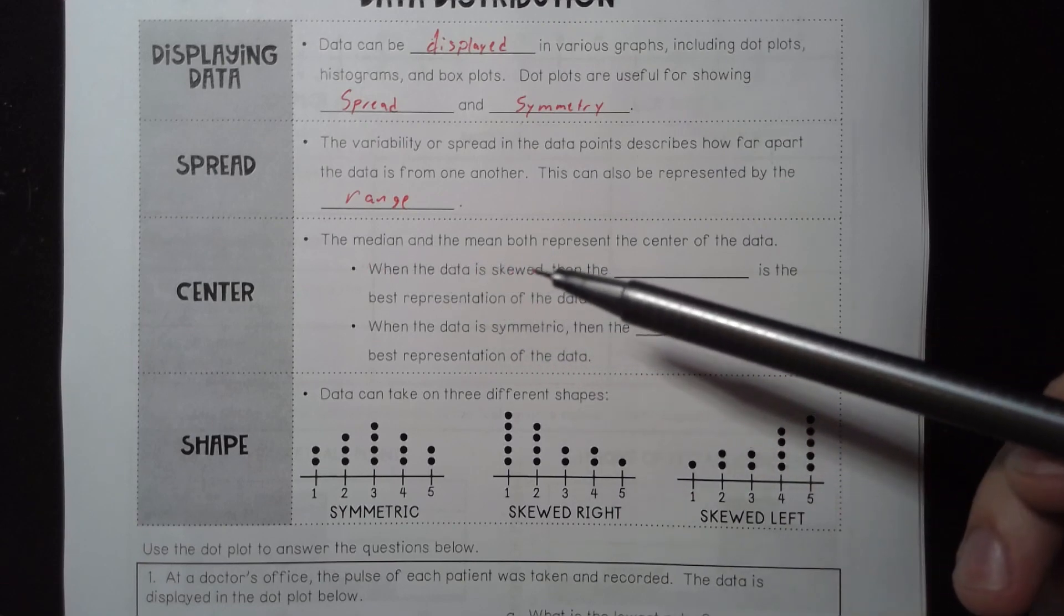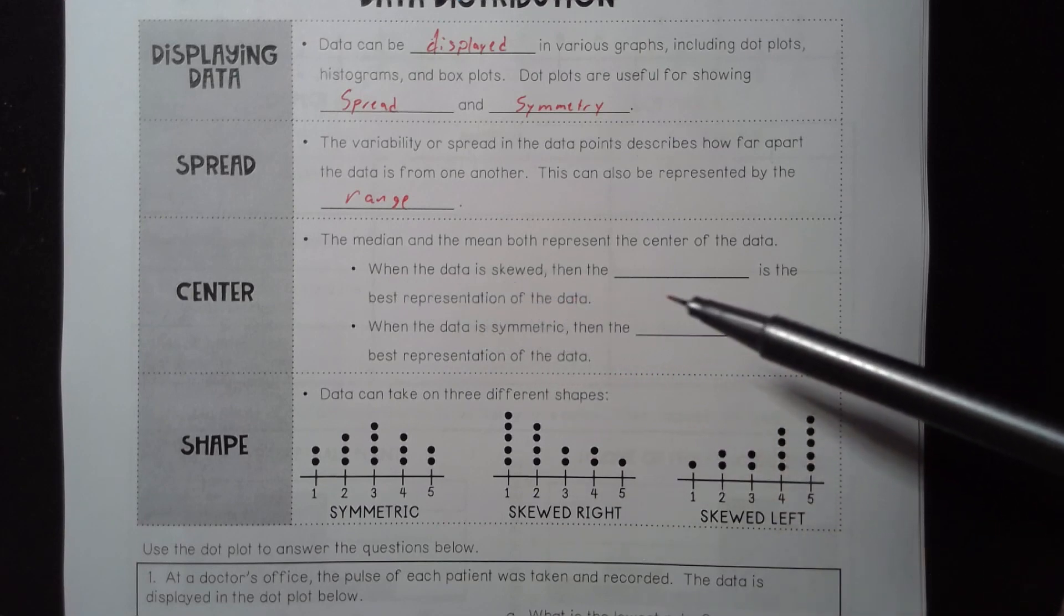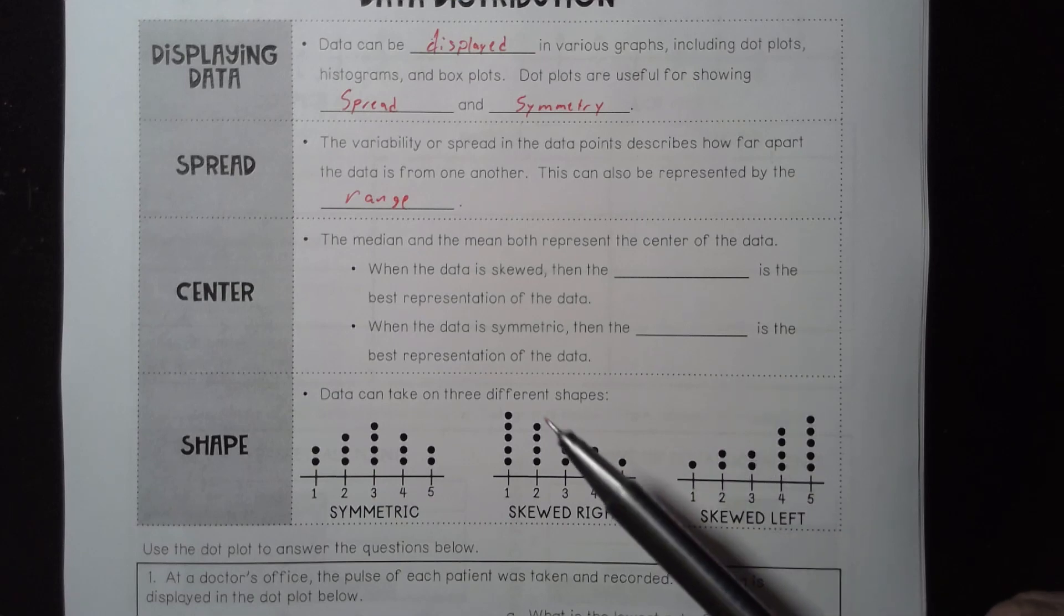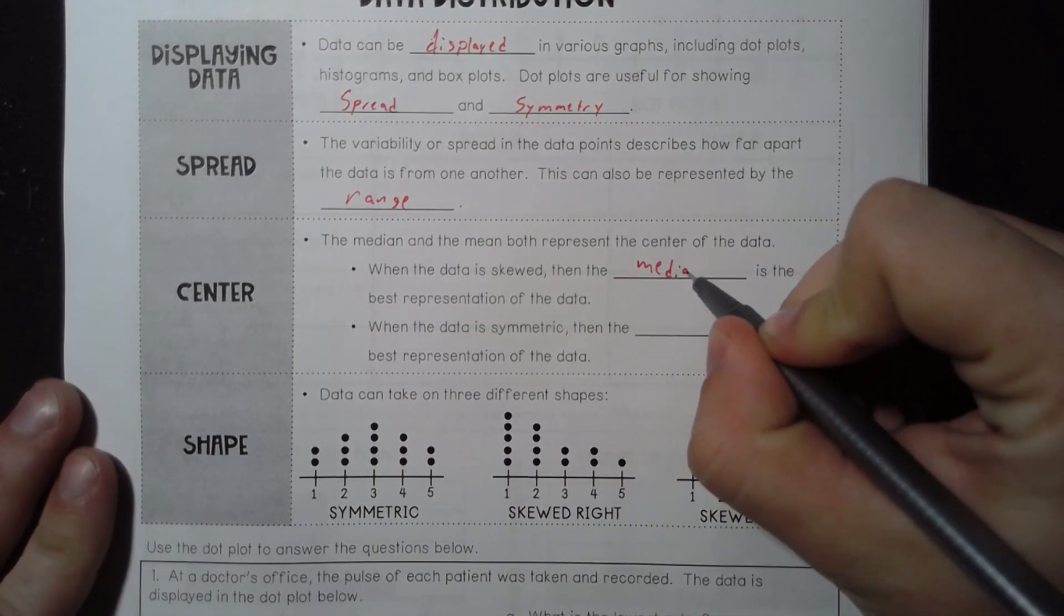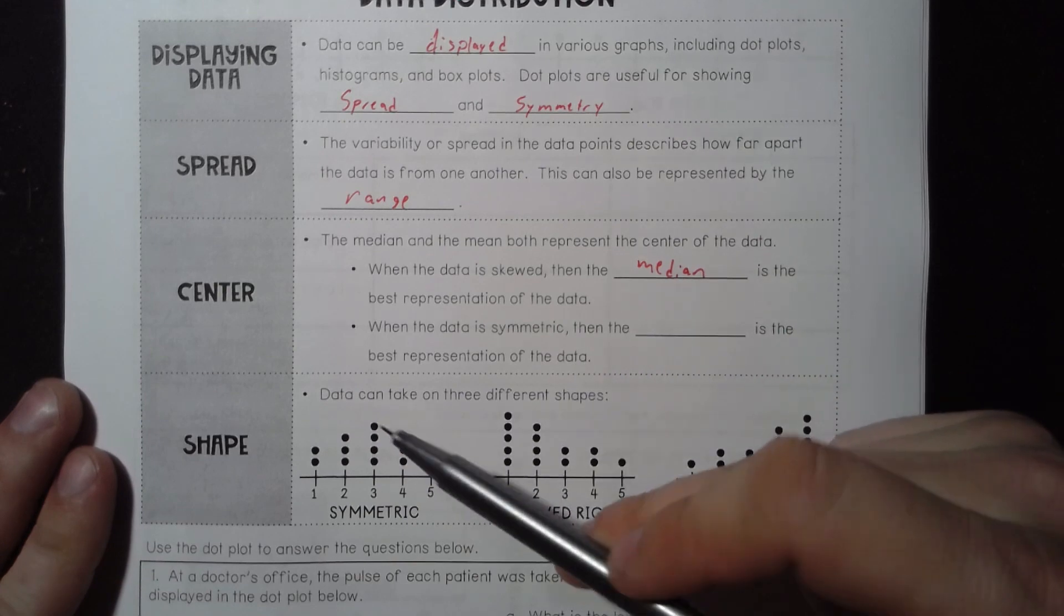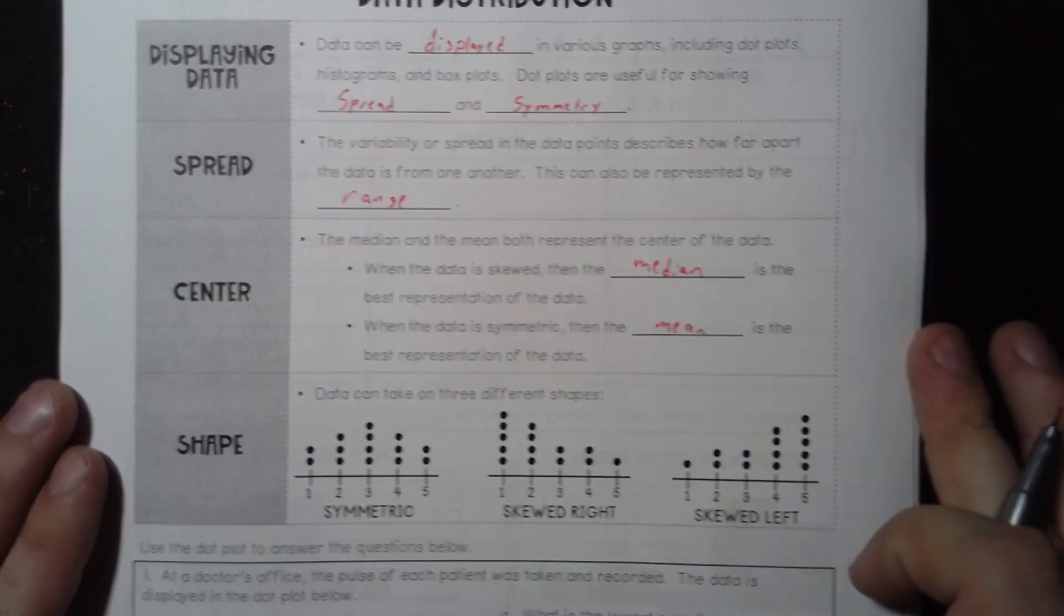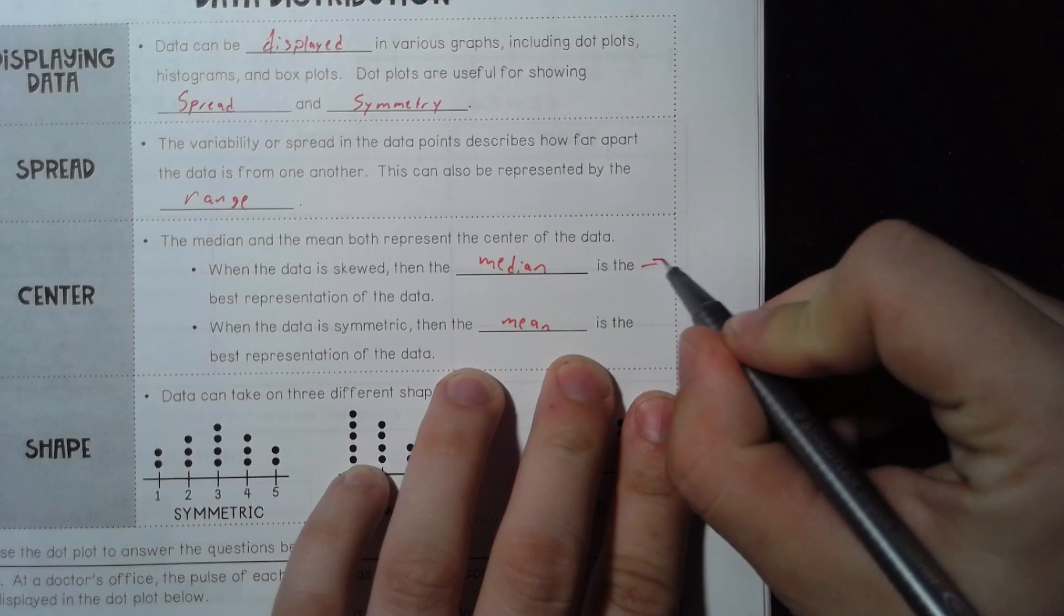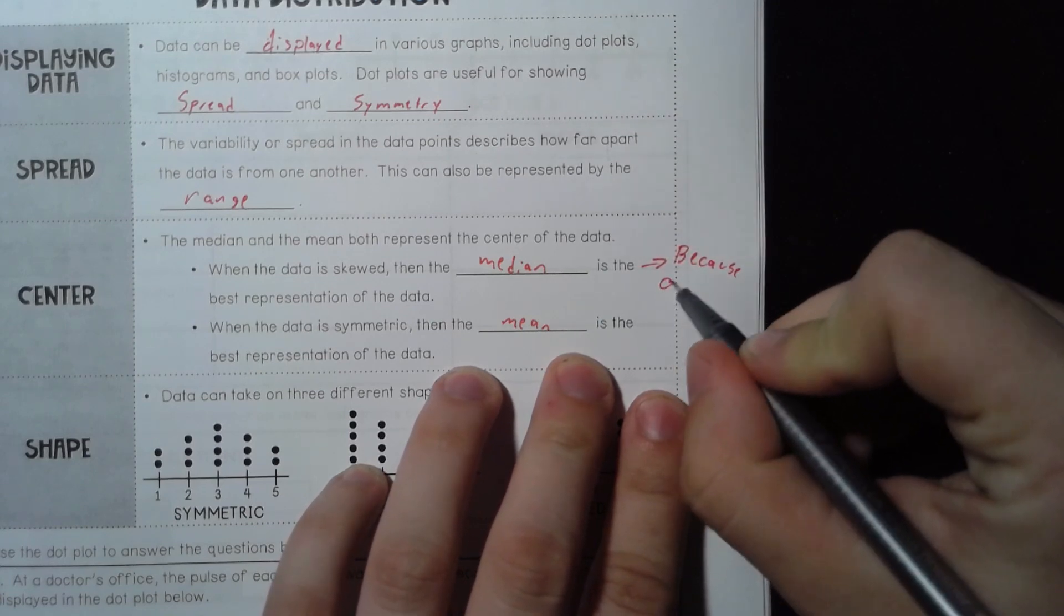Median and mean are both represented by the center of data. When the data is skewed, the median is the best representation of data. So when it looks like this, if it's kind of lopsided on one side, if you see that your data is lopsided, you're actually going to want to use the median more often. If it's more symmetrical and balanced, then you can start trusting the mean. And this is something, it's not in our notes, but I want you to add it.